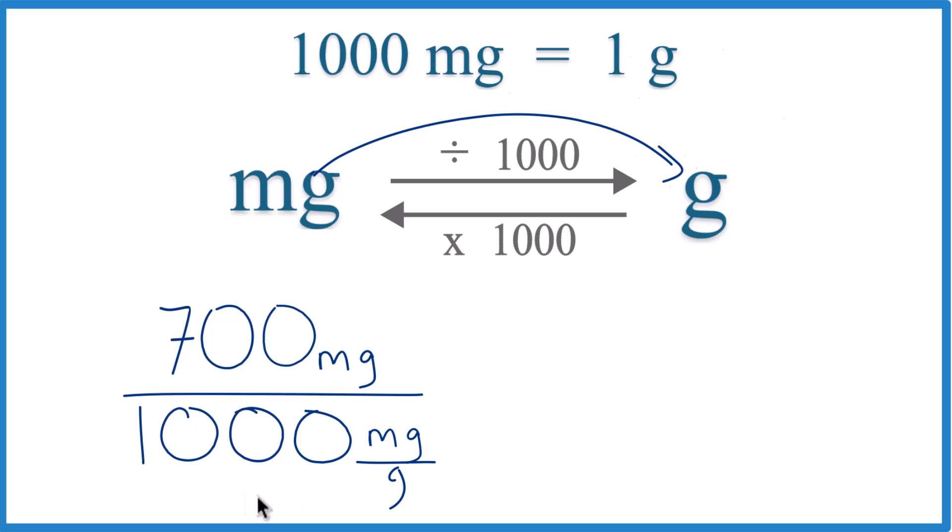If you look at the units though, you have 700 milligrams, that's what we've been given, and in the denominator we have thousand milligrams per gram. That's the conversion factor, and we use that so the units milligrams cancel out.